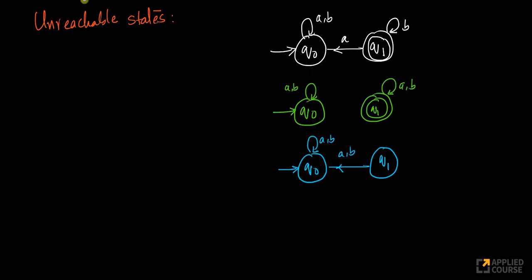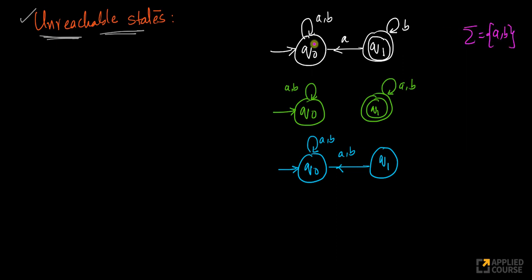There is a related concept called unreachable states. Just like the language of a finite automaton, there is also the concept of unreachable states. Look at this example: I'm starting at q0. Whatever input I get, I'm going to continue to stay in q0. I will never reach q1. So q1 here becomes an unreachable state.